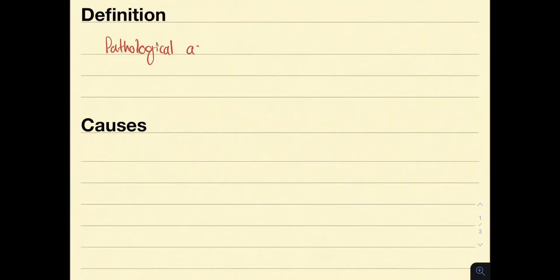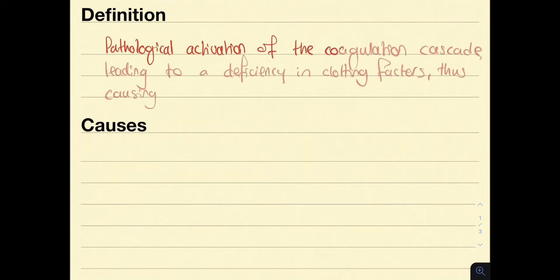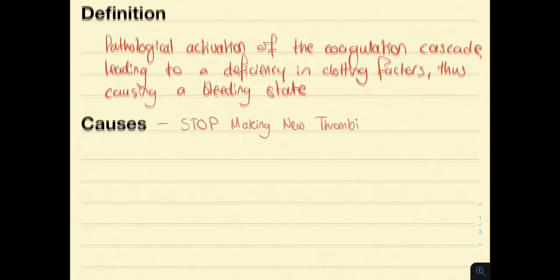DIC is defined as the pathological activation of the coagulation cascade. This leads to both micro and macro thrombi forming, as well as a deficiency in the clotting factors, causing a bleeding state.